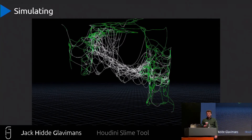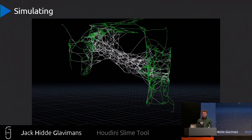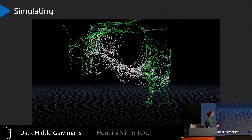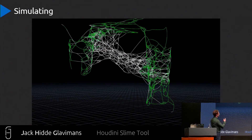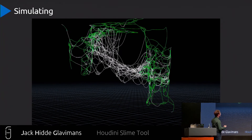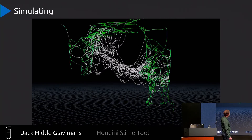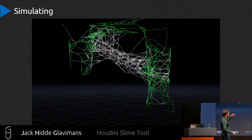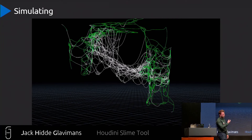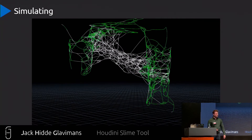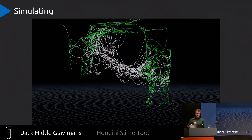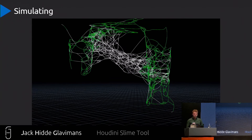There are two parts of the simulation. In the first one, I use the curve U attribute again to pin the ends, and I also use it to let the middle parts droop further to the ground — giving an intensity that follows the curve.